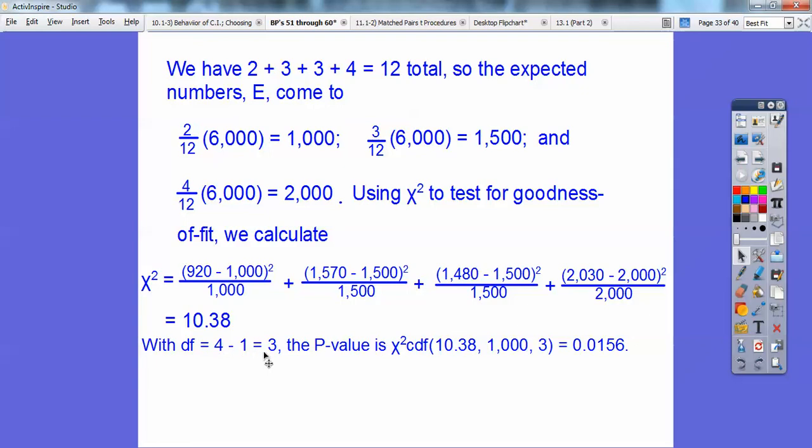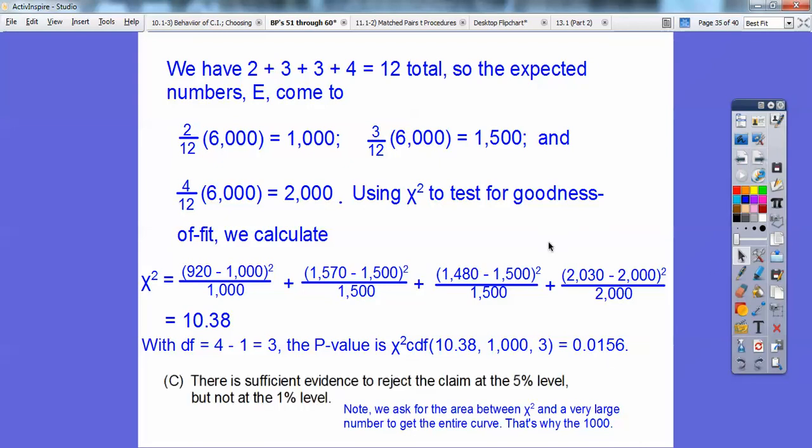Now, since we had four different bridges, and the degrees of freedom is 4 minus 1 or 3, so we look up the p-value on the chi-squared thing. And then we plug in chi-squared in our calculator, 10.38, and we punch in 1,000, because we want to go to the right right there. So we're asking for the area between the chi-squared and a very large number. Think of the bell-shaped curve where we want to go the very large number, your chi-squared in this very large number. So I plugged in 1,000 right there, so it'll take me way out here to 1,000. That just ensures 500 would've worked, probably 300 would've worked, but 1,000 definitely works. And then comma 3 for degrees of freedom, and I get 0.0156. So that is between 1 and 2 percent right there. So which one was it between 1 and 2 percent? So it's sufficient evidence to reject the claim at the 5 percent level, but not the 1 percent level.